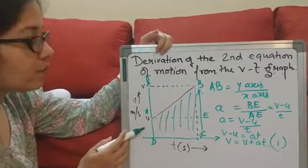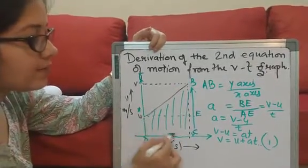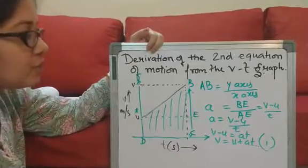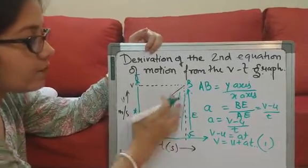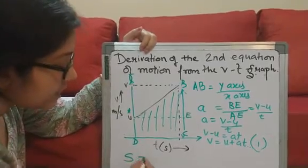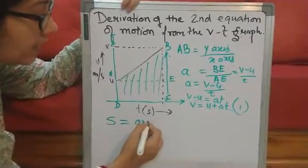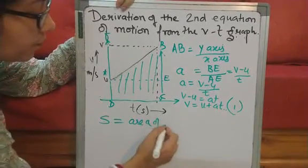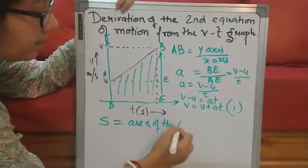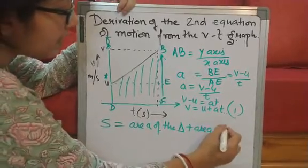Now, if you look at the figure carefully, it consists of a right angle triangle and a rectangle. So if I find out the area of this whole thing, then I can find out my displacement.